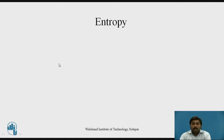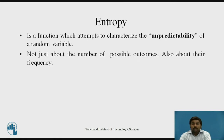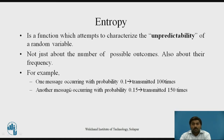Now let's talk about entropy. What is meant by entropy? It is nothing but the average information of the message, and it characterizes the unpredictability of a random variable. It is not only about average information, but also about frequency in the communication system. For example, in a communication system where the source generates different messages: one message has probability 0.1, so it is transmitted 100 times; a second message has occurring probability 0.15, so it is transmitted 150 times. Comparing these two at the receiver side, the second message has 50 percent more probability of occurrence than the first.